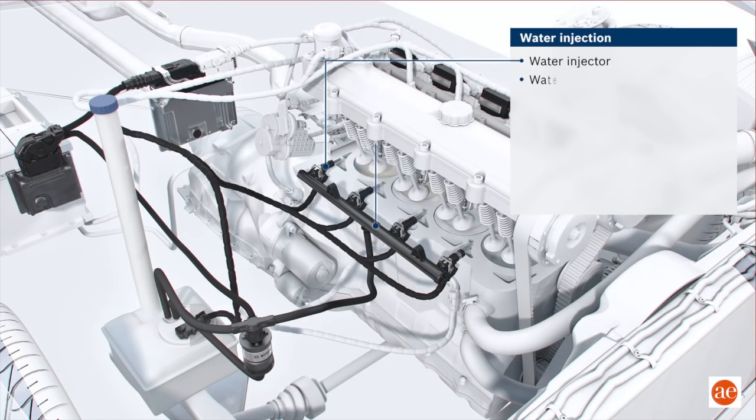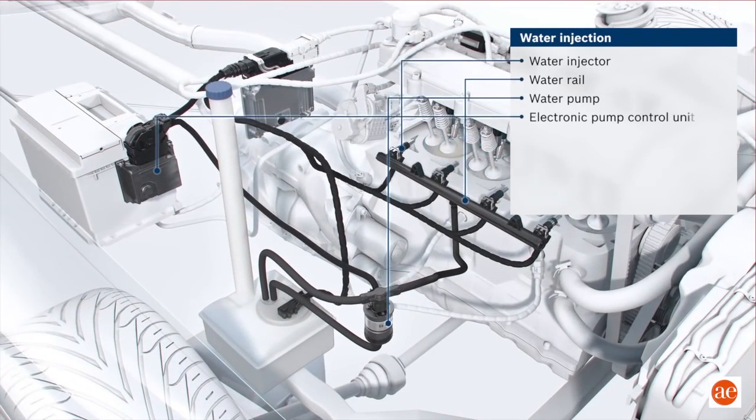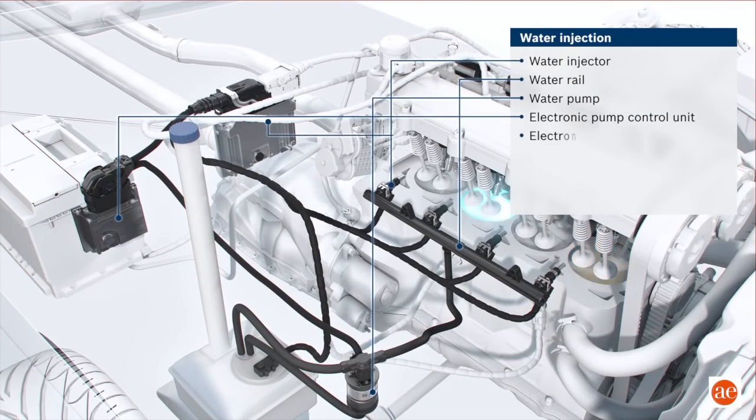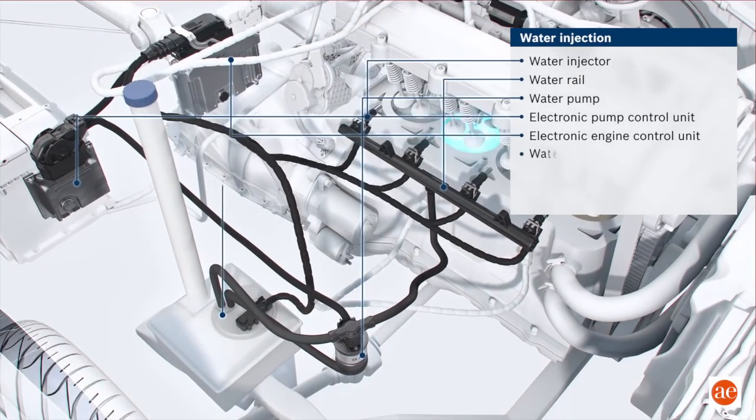Besides the water injector and the water rail, the system contains further components: a water pump, an electronic pump controller, an electronic engine control unit for the entire system, and last, a water tank.